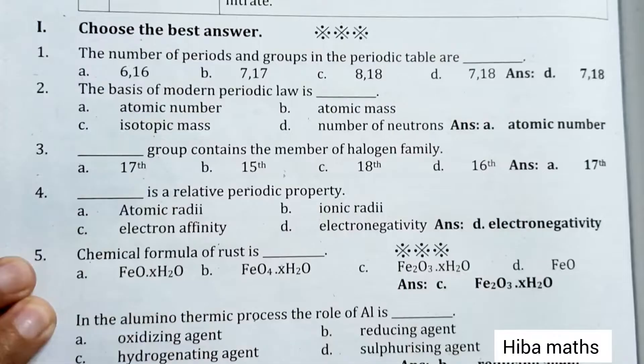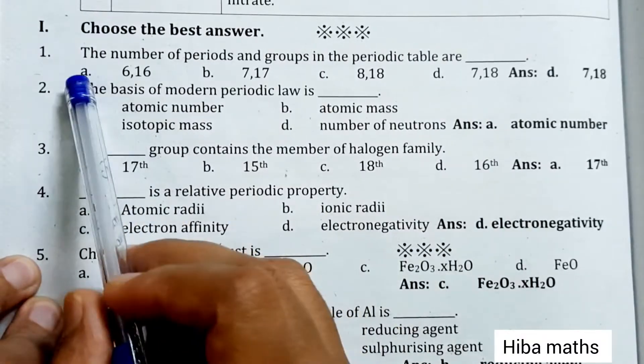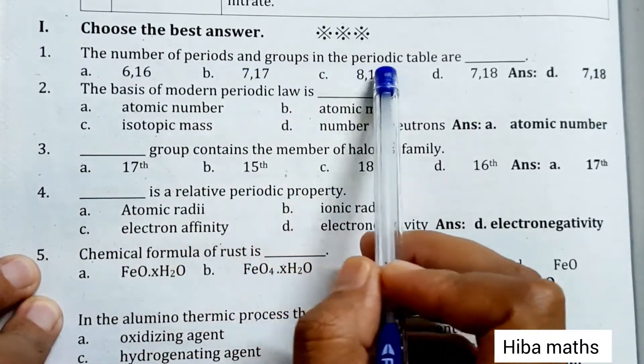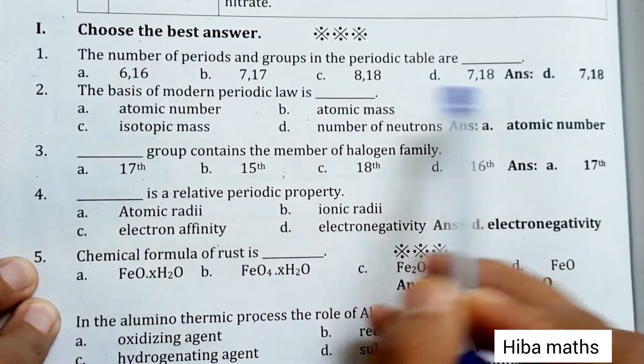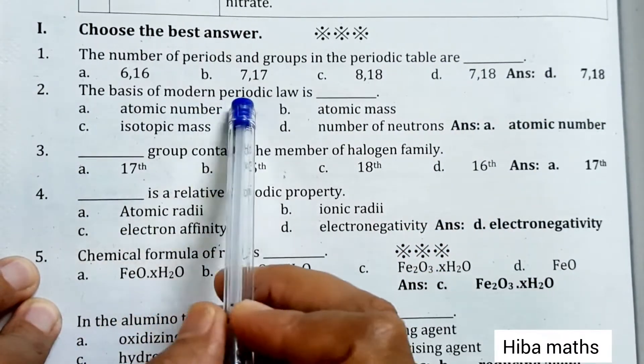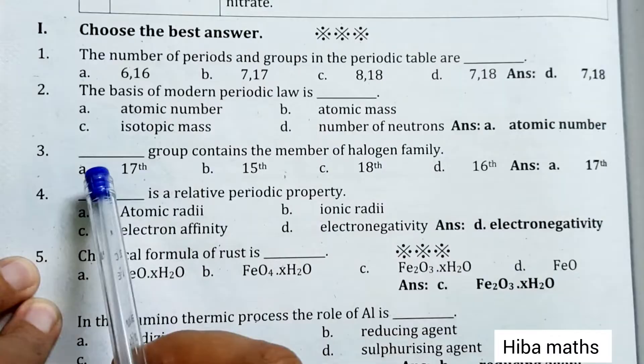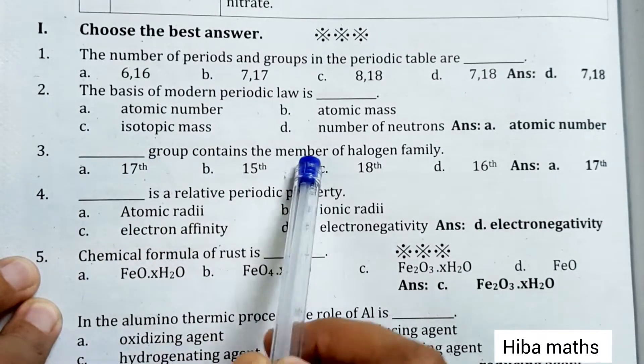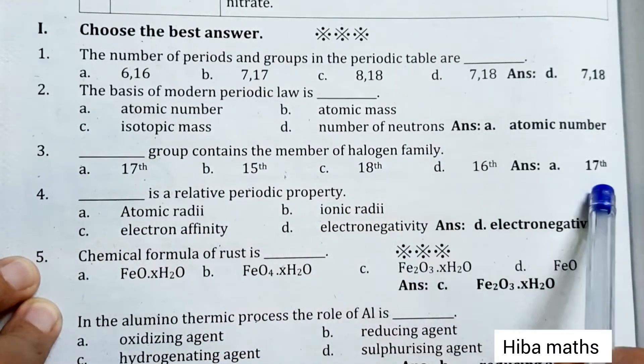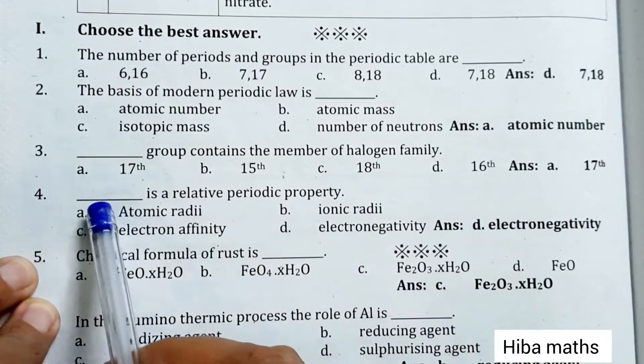The number of periods and groups in the periodic table are 7 and 18. The basis of modern periodic law is atomic number. The 17th group contains the members of halogen families.